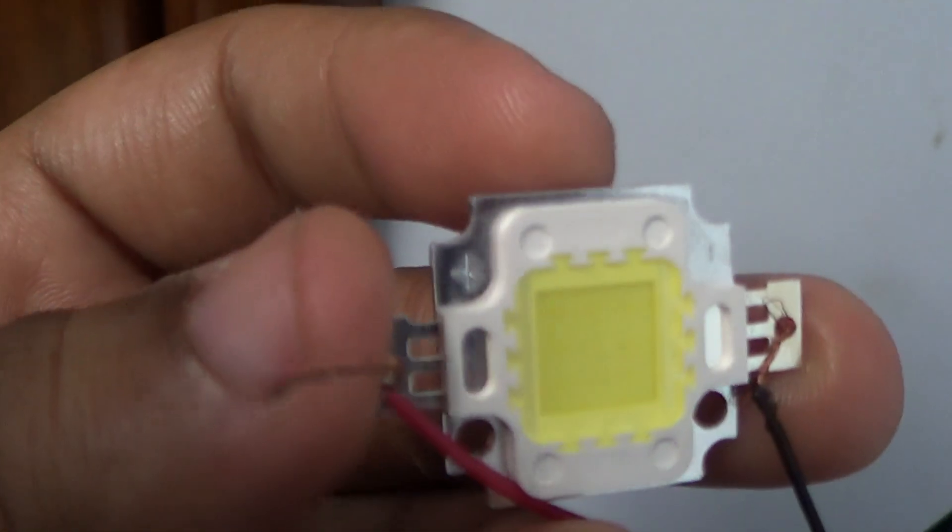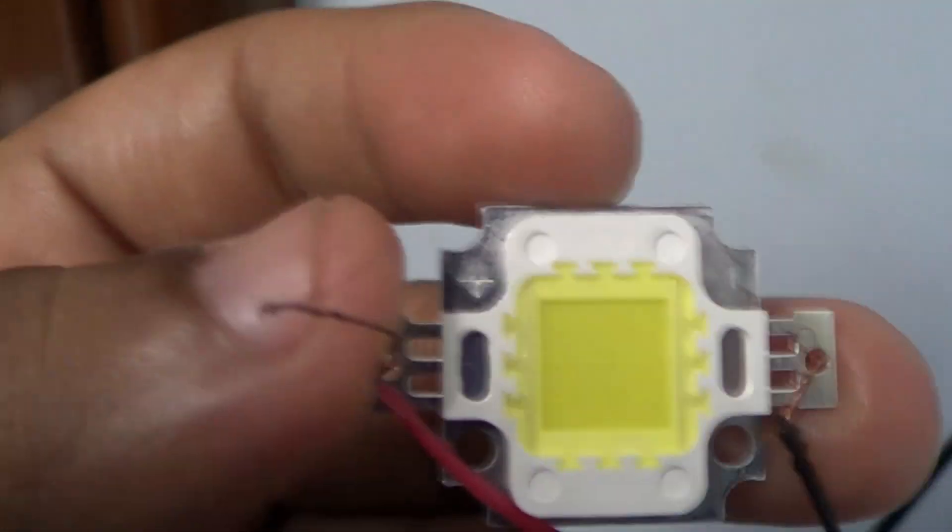Here is my twelve volt supply. I have connected the positive lead of the supply to the positive lead of the LED, and the negative to the negative. And let's turn it on to see how bright it can go. Oh, wow. It just dims out all other lights. It's really, really bright. And be very careful while removing it. It can go very hot.